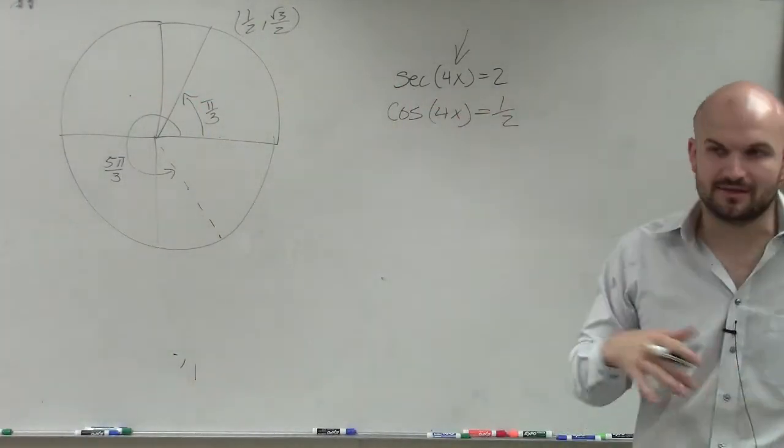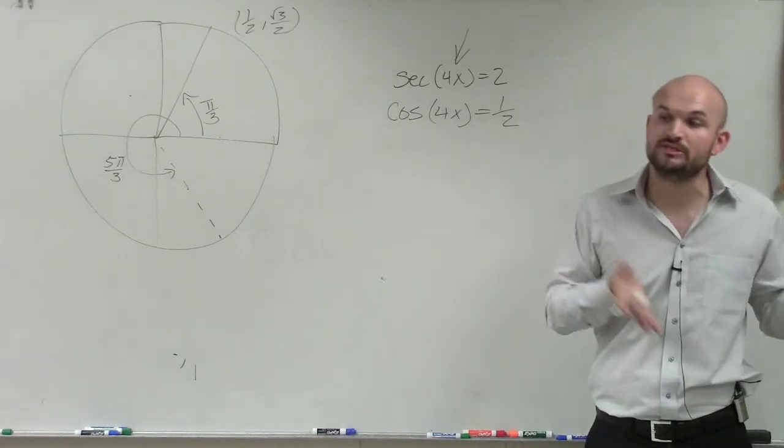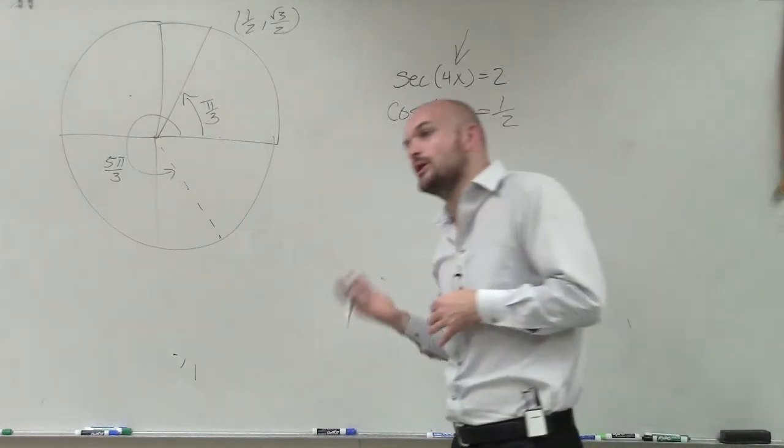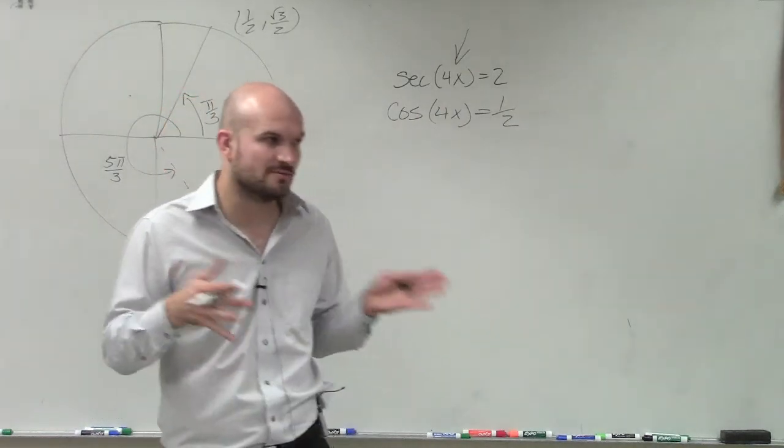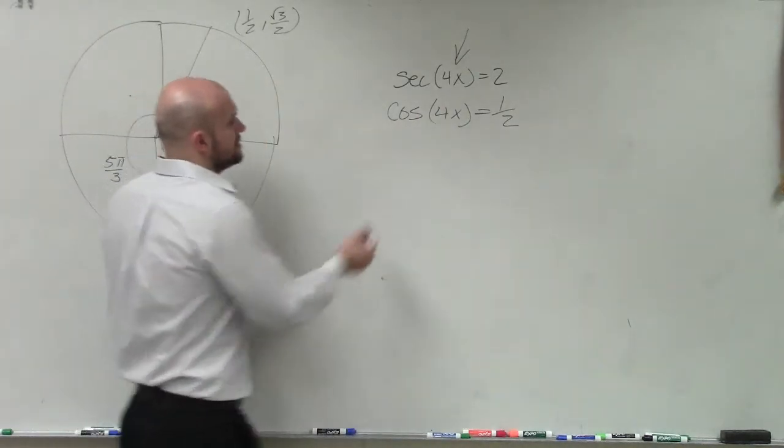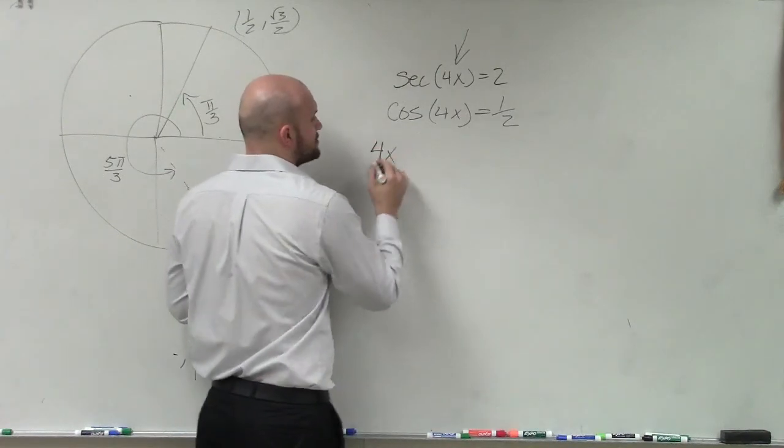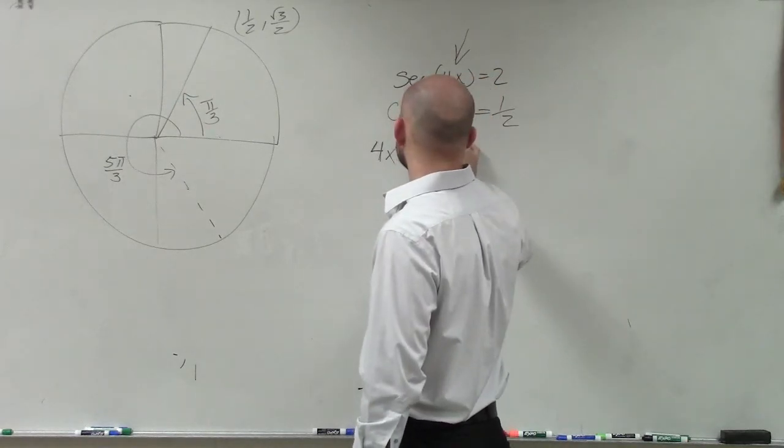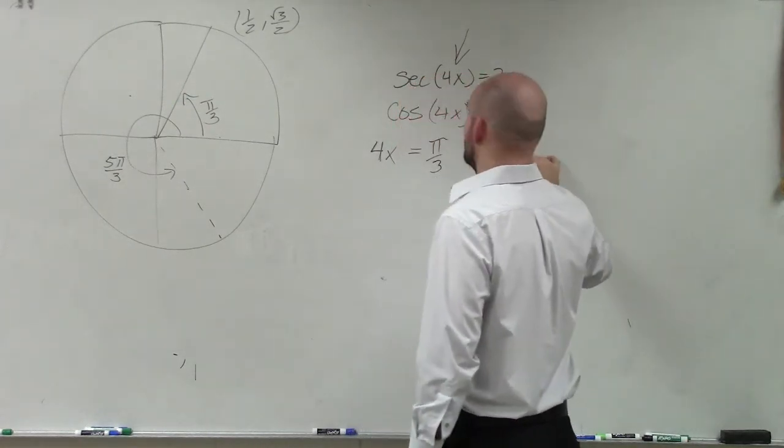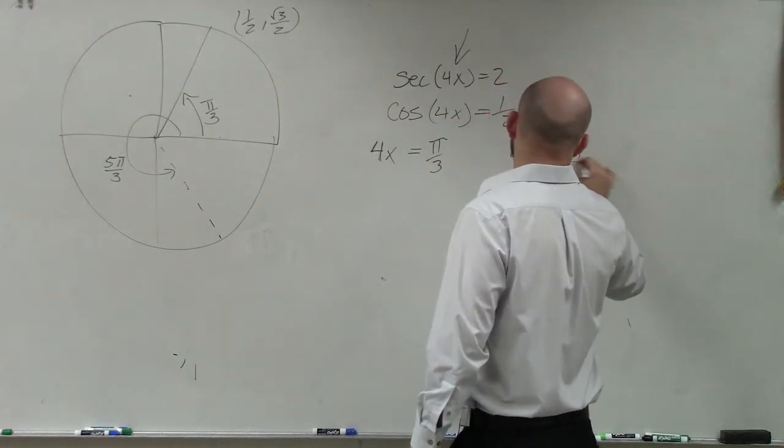So again, this is one of those things where I can say, determine all the solutions between 0 and 2 pi, and determine all the real solutions. So anyways, by solving this, I can now say that 4x equals pi over 3, and 4x equals 5 pi over 3.